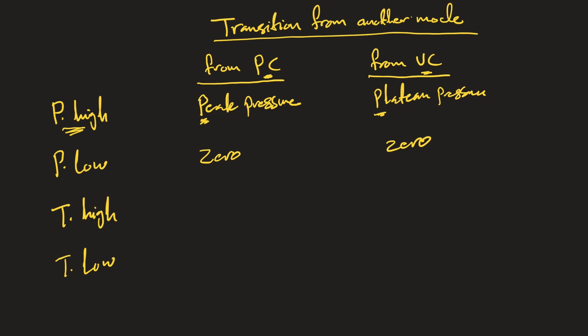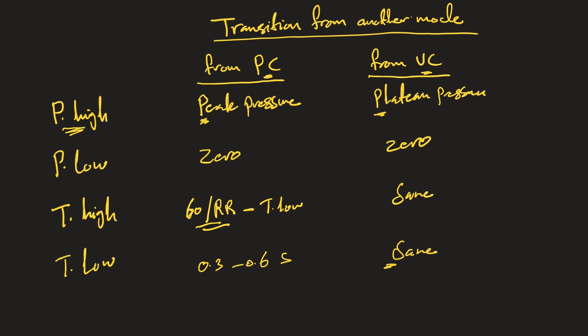P-low is again zero. For T-high, take 60 divided by the respiratory rate to get the respiratory cycle, then subtract T-low. So if the patient was on pressure control or volume control at 15 breaths per minute, the cycle is 4 seconds, and you subtract T-low from that to get T-high. T-low is typically started in the range of 0.2–0.3 seconds. These are starting values for an adult population; pediatric patients likely need shorter values.